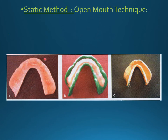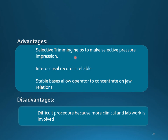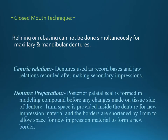In the clinical open mouth technique, the denture is taken from the patient's mouth, the surface and borders are trimmed, a wash impression material is placed first, and then the final impression material is placed on top. Advantages include: selective trimming helps make selective pressure impressions, the inter-occlusal record is more reliable, and the stable basis allows the operator to concentrate more on jaw relations.